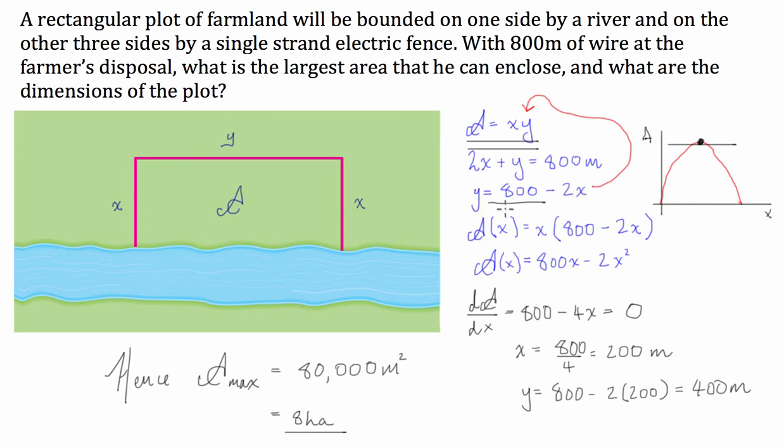We then made the limiting function in terms of one of the variables and then we substituted that into our function or our objective function that had to be maximised so we could have the function that had to be maximised in terms of just one variable. And after we did that it was quite a straightforward process to just differentiate this objective function.